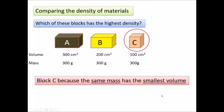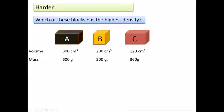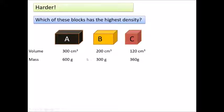Where it gets tricky is when we have different masses and different volumes — this is where we need the formula. Block A has 600 grams in 300 cm³, so each cm³ is 2 grams. Block B has 300 grams in 200 cm³, giving a density of 1.5 g/cm³. Block C has 360 grams in 120 cm³, meaning each cm³ has a mass of 3 grams — so C has the highest density.